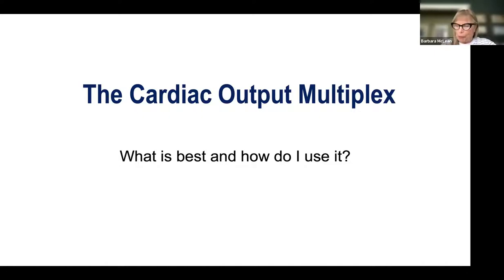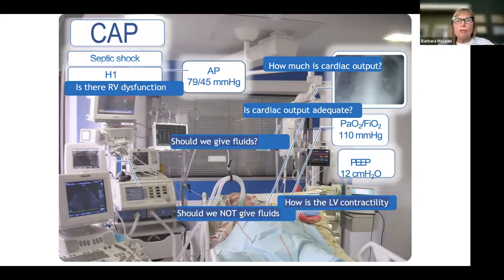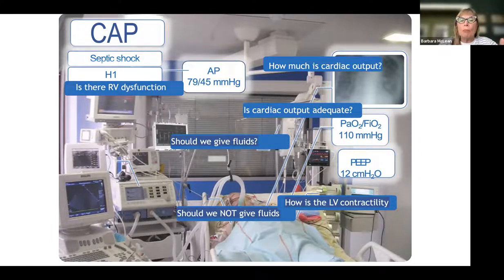To begin, we'll look at a patient with multiple different types of monitoring equipment: a Philips monitor for echocardiogram, an EV1000, an echocardiogram, mechanical ventilation, and multiple drips. This is a really sick patient.